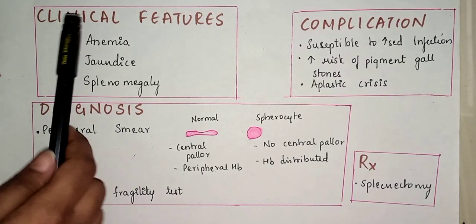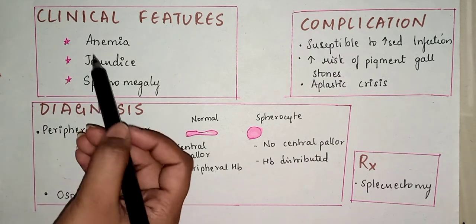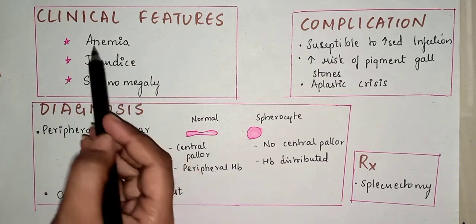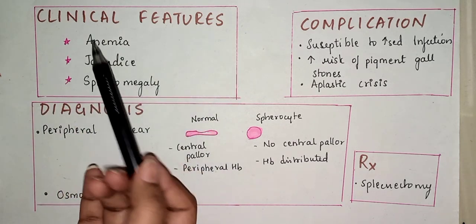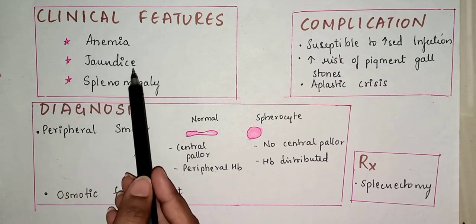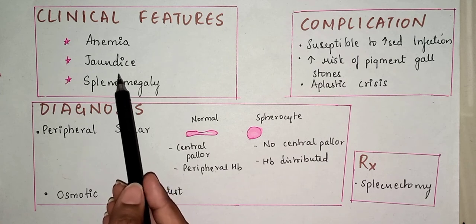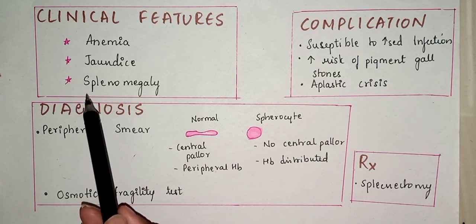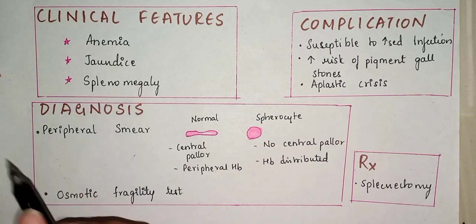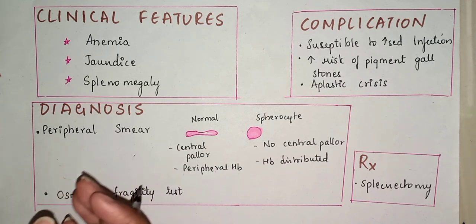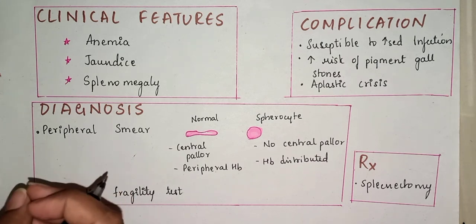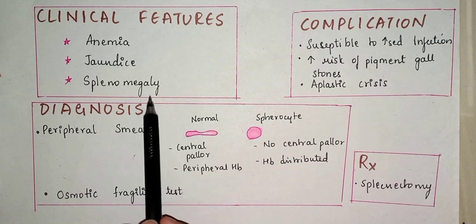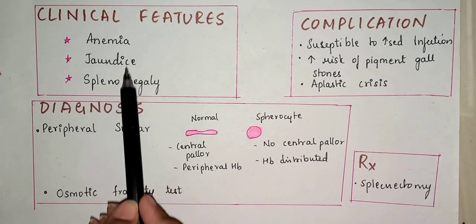Now we come to the clinical features. In this type of anemia, you can see anemia and its symptoms such as paleness and reduced blood count. Due to destruction, the number of RBCs is decreased, leading to anemia. There is also jaundice — because of the excessive premature death of RBCs, there is excessive bilirubin in the blood. As hemolysis takes place in the spleen, macrophages destroy these RBCs, leading to excessive work by the spleen and its enlargement — splenomegaly. The three main clinical features are anemia, jaundice, and splenomegaly.